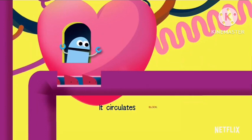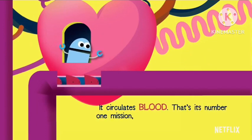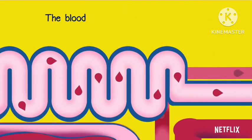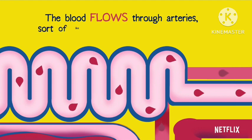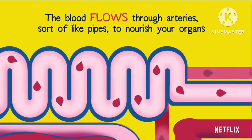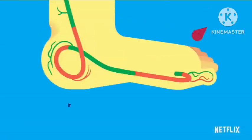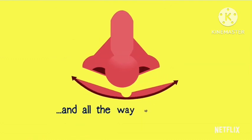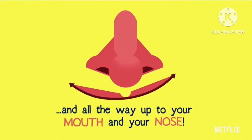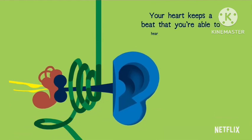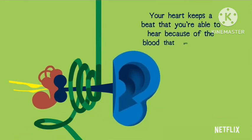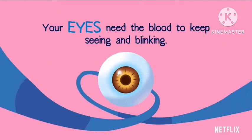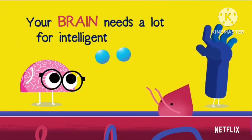It circulates blood, that's its number one mission, to bring your whole body its needed nutrition. The blood flows through the arteries, sort of like pipes, to nourish your organs that come in all types. It carries the oxygen down to your toes and all the way up to your mouth and your nose. Your heart keeps a beat that you're able to hear because of the blood that gets pumped to your ear.